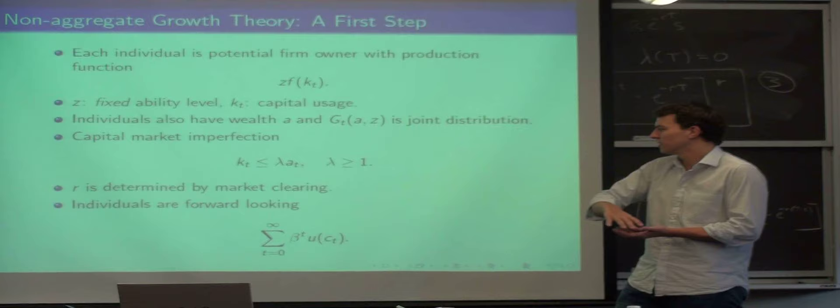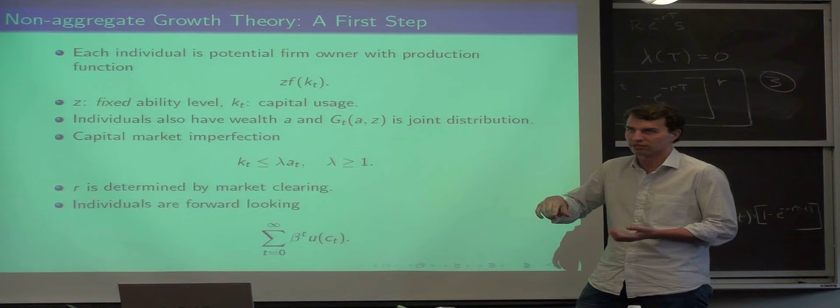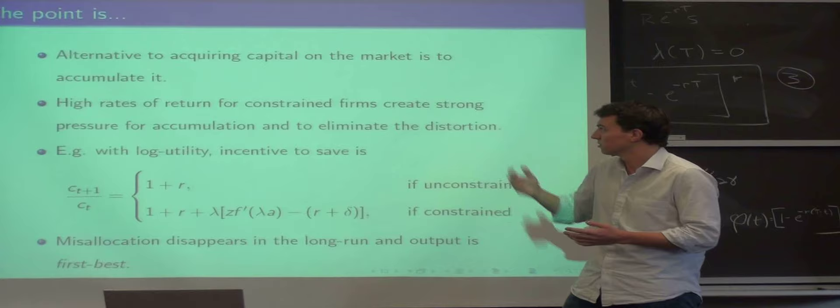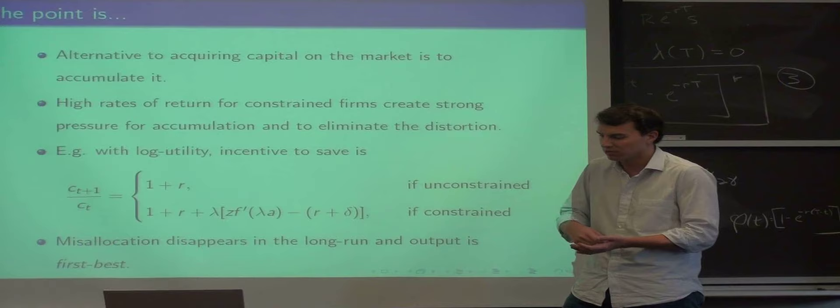The other assumption is that there's a credit market which is competitive, except for this credit market imperfection, and the interest rate R is determined in general equilibrium. Individuals are forward-looking as well.